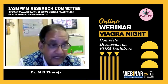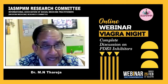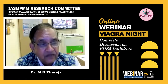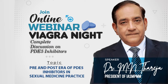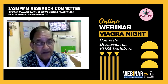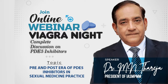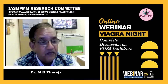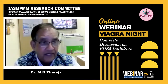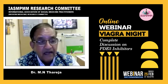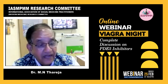I started my practice in 1988 as a sexual medicine specialist. At that time, sildenafil citrate was not available, but we were doing sexual medicine practice. The commonly used treatments at that time were psychotherapy, and we used to give psychotherapy to patients. The commonly used drug was yohimbine, available in 2 mg tablets, given at 6 mg to 18 mg per day in divided doses.